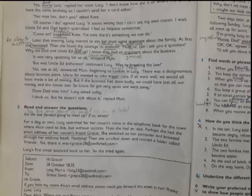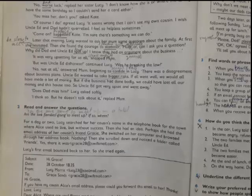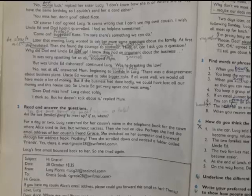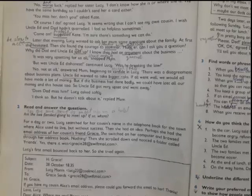It was very... but was Uncle Ed dishonest? continued Lucy. Was he breaking the law? No, not at all, answered Mom, beginning to confide in Lucy. Confide means to tell something, to reveal when you have trust. There was a disagreement about business plans. Uncle Ed wanted to take bigger risks. If it all went well, we would all have made a lot of money. But if the business had done badly, we could have lost all our money and this house too.